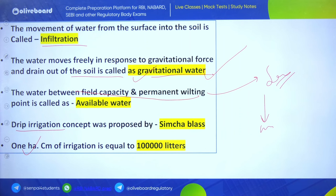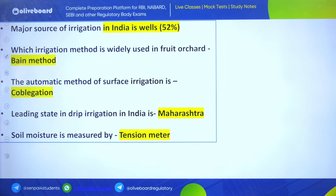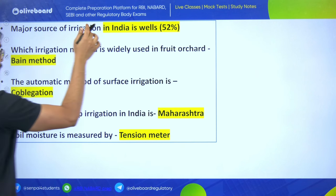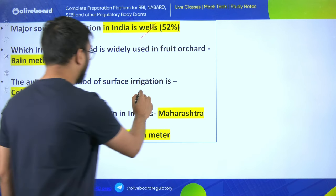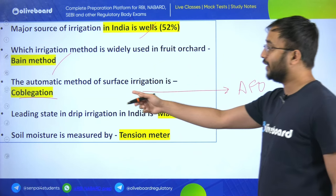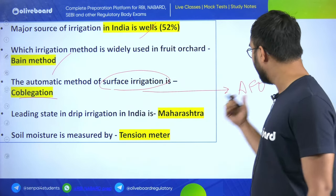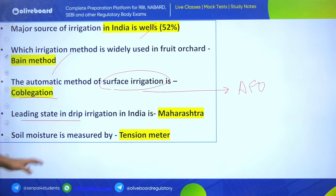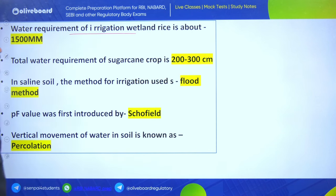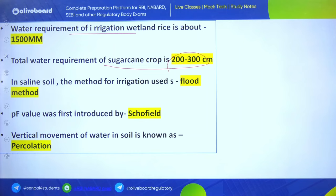The major source of irrigation in India is wells at 52 percent. Irrigation method widely used in fruit orchards is the basin method. Cobalgation was asked in AFO 2017 - it is the automatic method of surface irrigation. Leading state in drip irrigation in India is Maharashtra. Soil moisture is measured by tensiometer. Water requirement of wetland rice is about 1500 mm. Total water requirement for sugarcane is 200 to 300 centimeters.